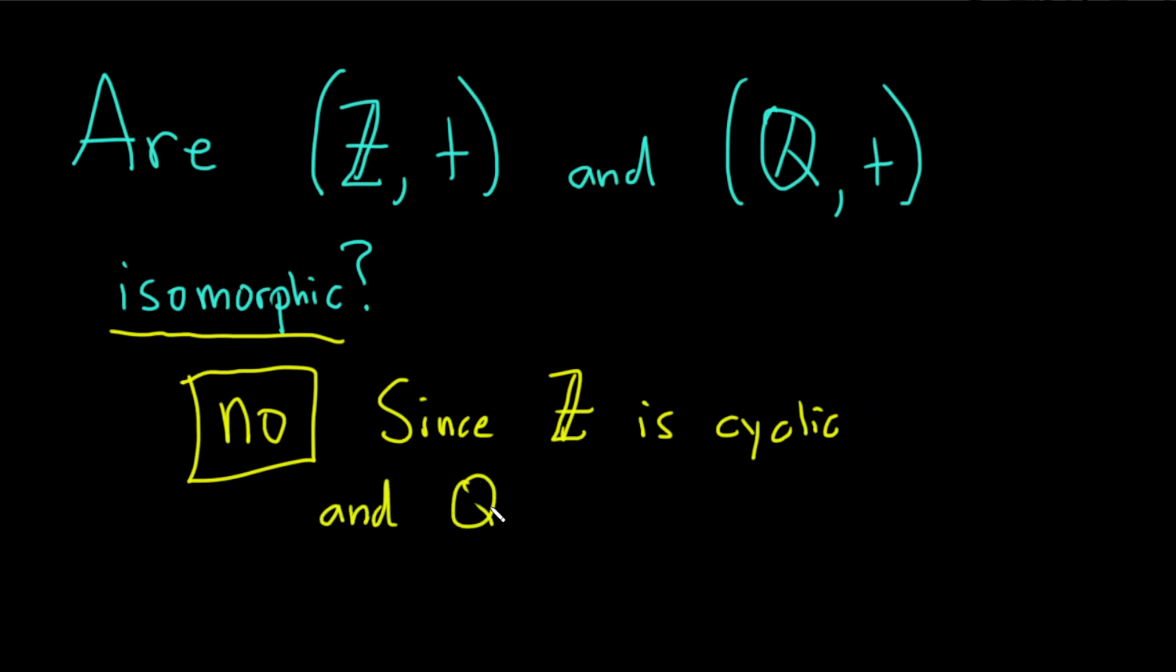and ℚ is not, then they cannot be isomorphic.